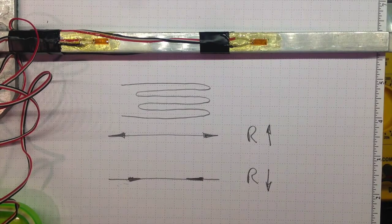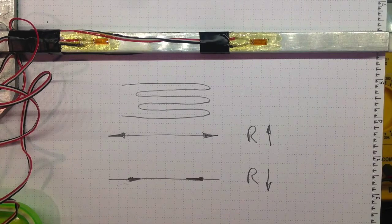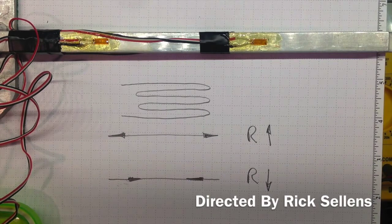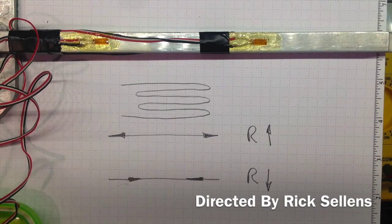Now these are going to be very small changes in resistance. And to measure those very small changes we need to find a way to detect those very small changes while eliminating the large resistance.